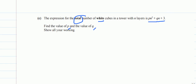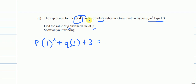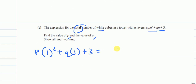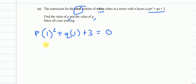Taking layer 1 (n = 1): p(1)² + q(1) + 3 = 0, which gives p + q + 3 = 0, so p + q = −3. We can rearrange to get p = −3 − q. This is equation 1.